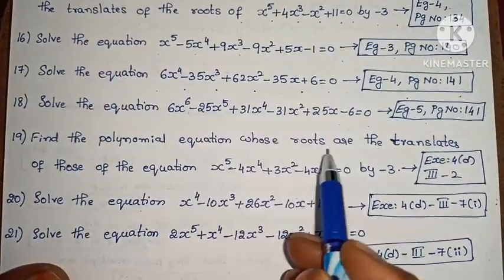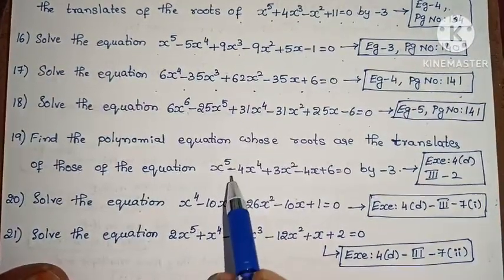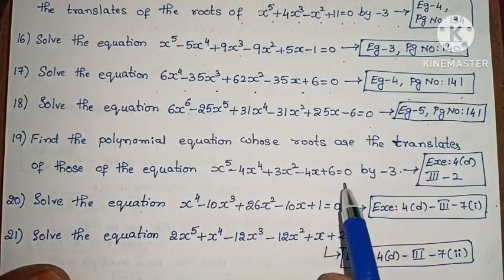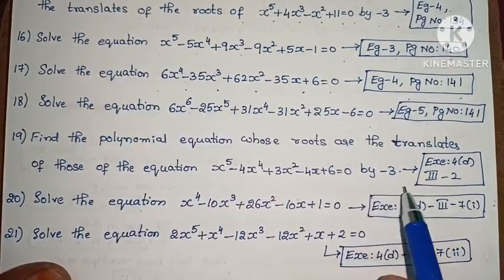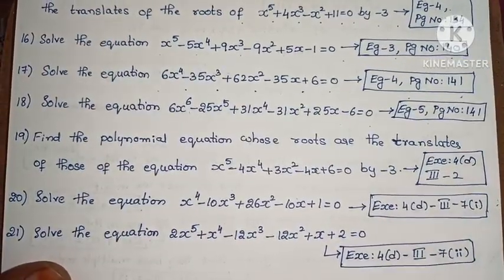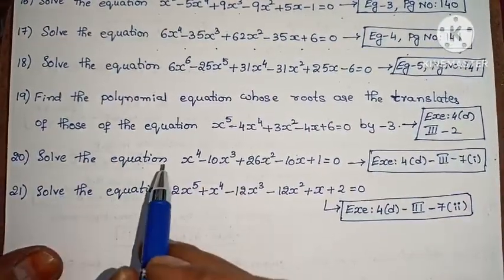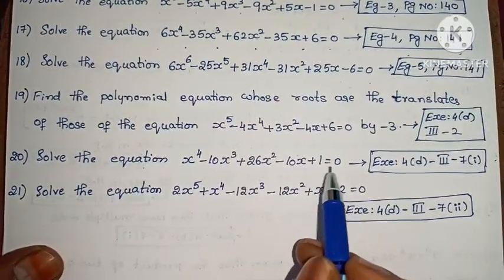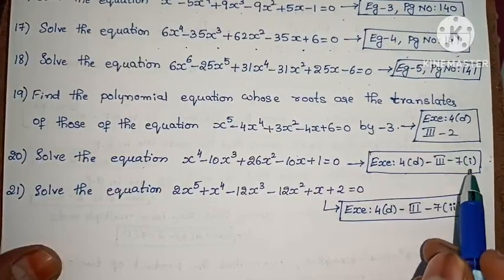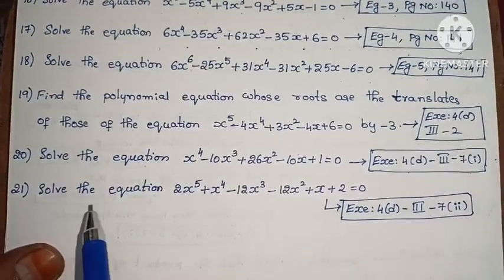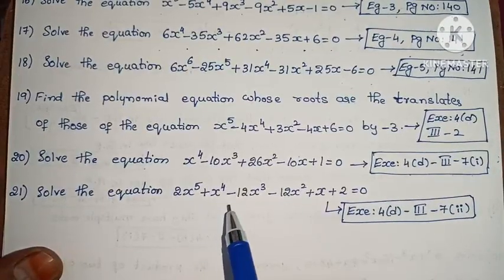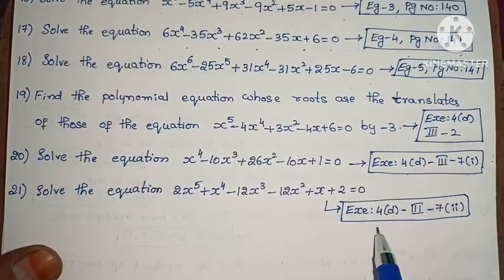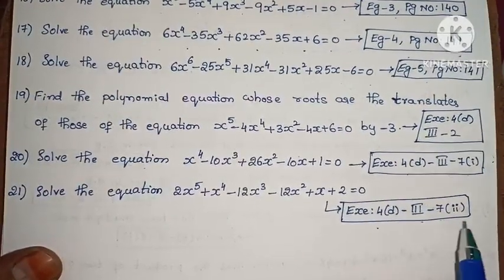Next, find the polynomial equation whose roots are the translates of those of x⁵ minus 4x⁴ plus 3x² minus 4x plus 6 equals 0 by minus 3. Exercise 4A, third Roman numeral, second one. Next, solve x⁴ minus 10x³ plus 26x² minus 10x plus 1 equals 0. Exercise 4A, third Roman numeral, seventh, first one. Next, solve 2x⁵ plus x⁴ minus 12x³ minus 12x² plus x plus 2 equals 0. Exercise 4A, third Roman numeral, second one.